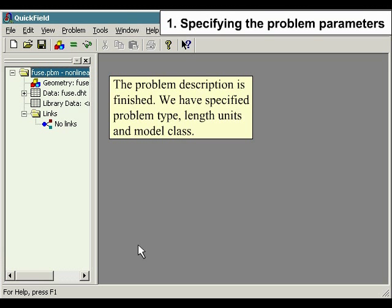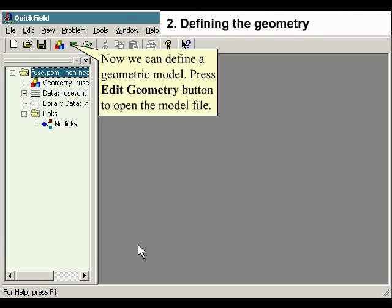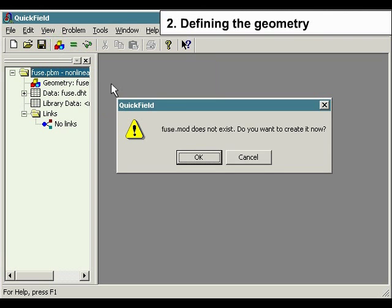The problem description is finished. We have specified problem type, length units, and model class. Now we can define a geometric model. Press Edit Geometry button to open the model file.